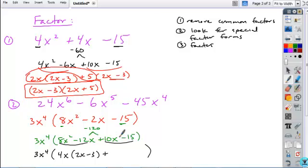Do the same thing with the second pair. Take out a common factor of 5, leaving a 2x and a minus 3.